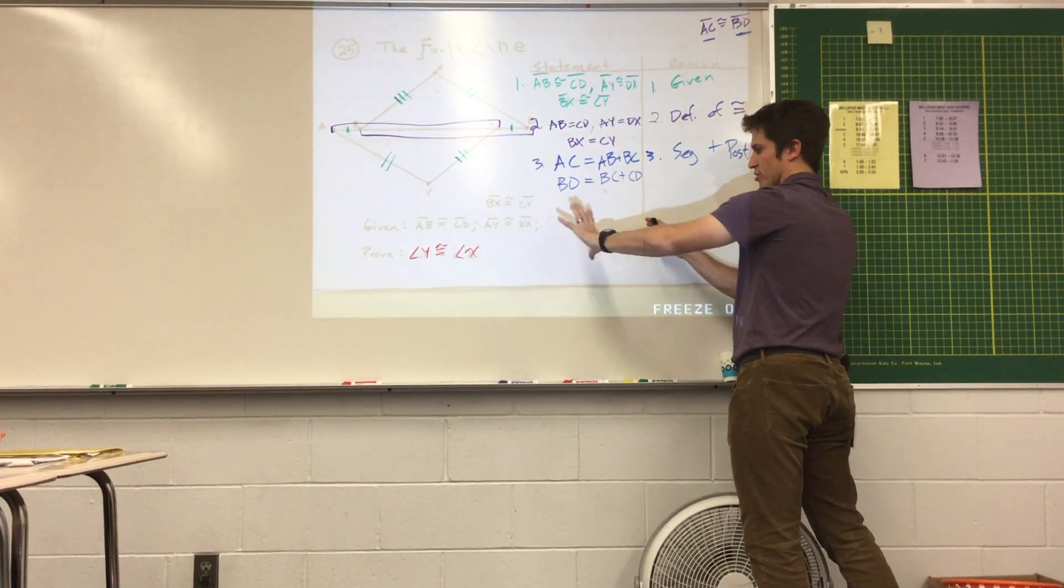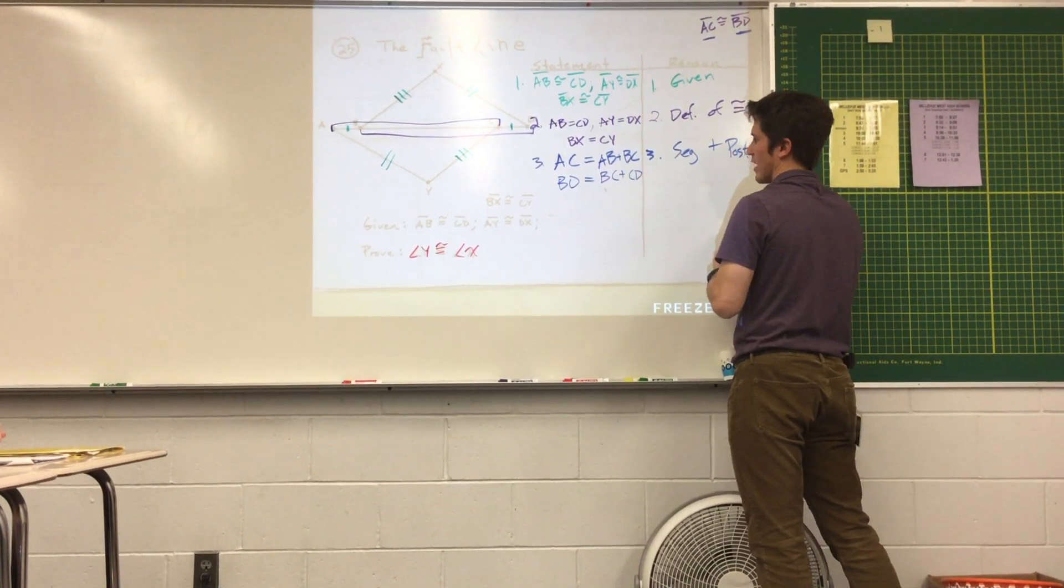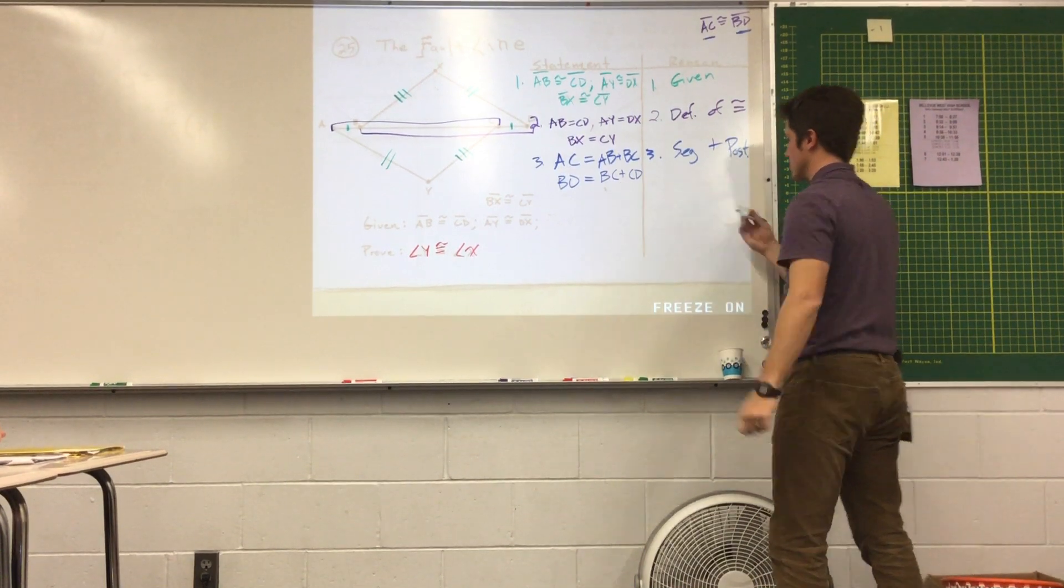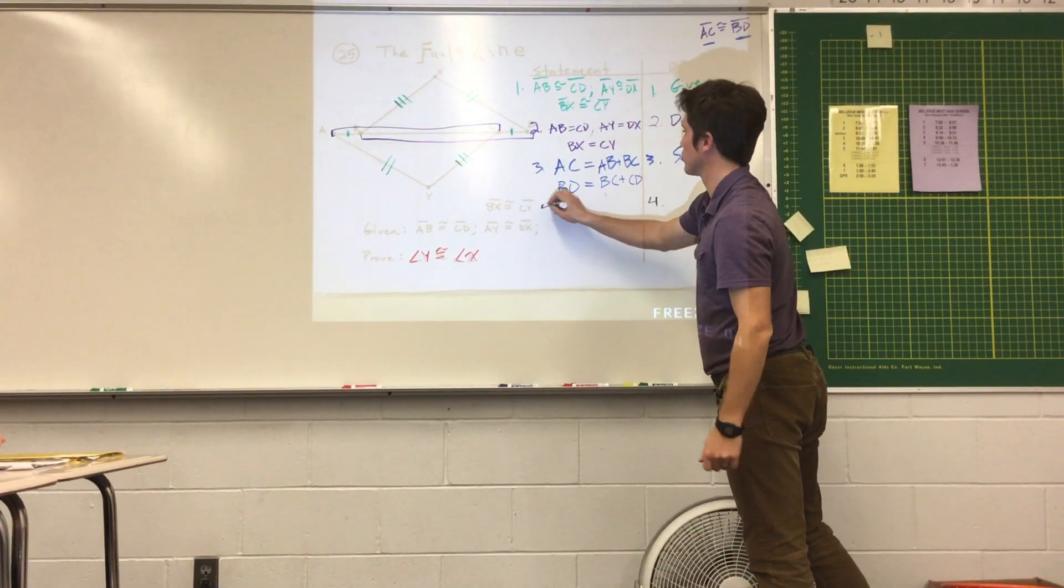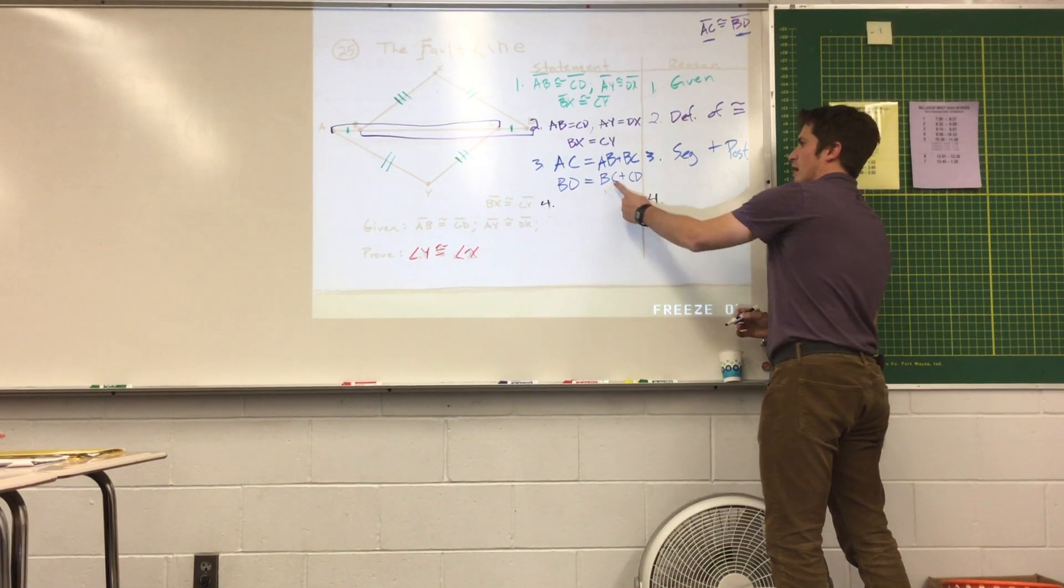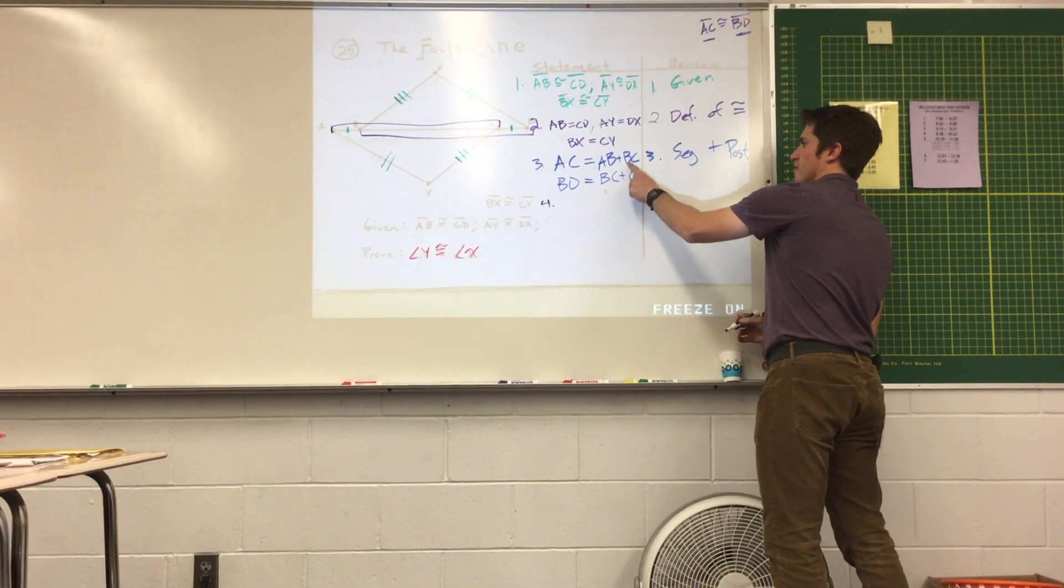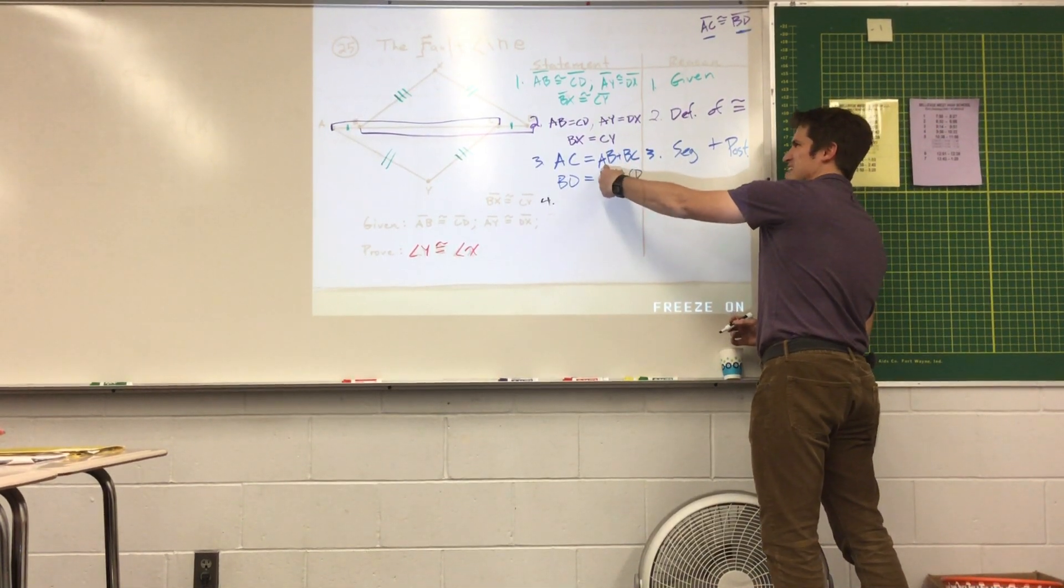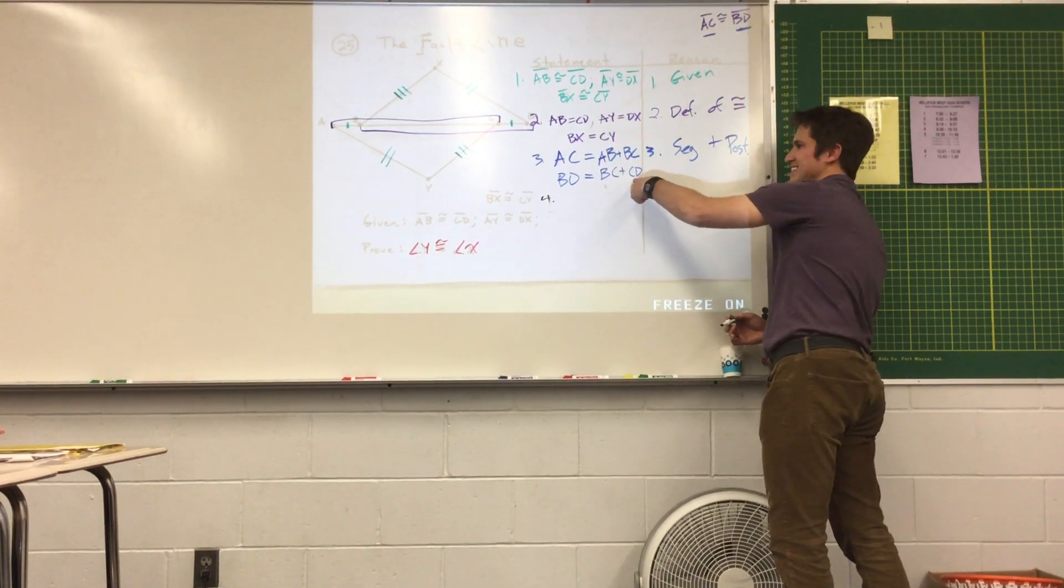Eventually I'm going to have it where they're on each side of the equation and I subtract it out. But I've got to do something first. This is probably the hardest thing to see in the proof. I have BC in both of them. One of them has AB. One of them has CB.